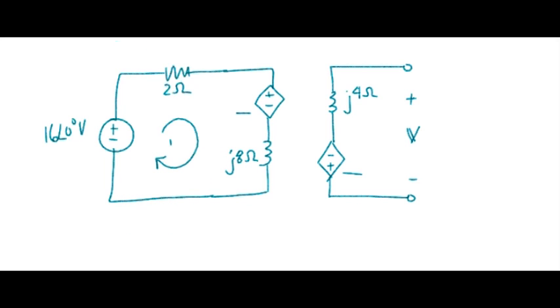Now I can identify my mesh currents. Call that I1 and call that I2.